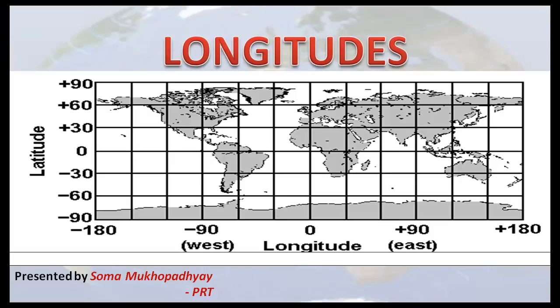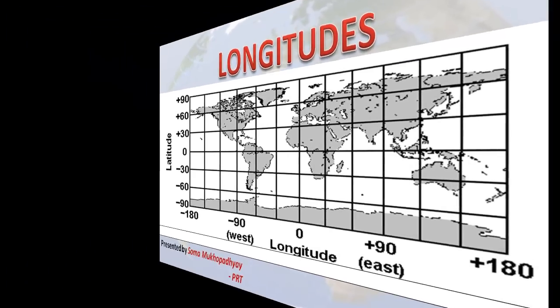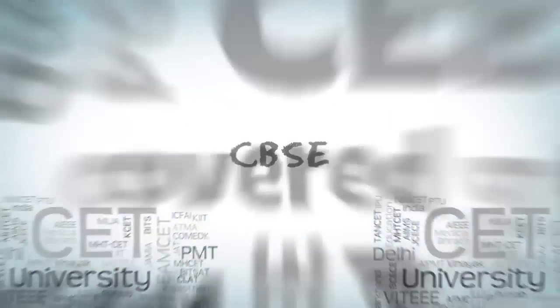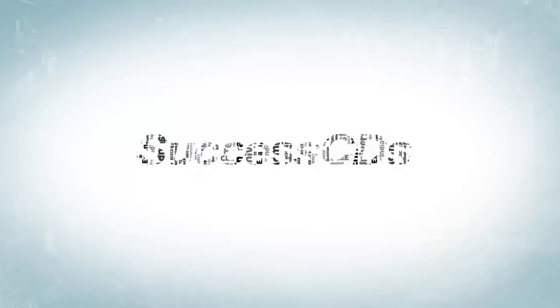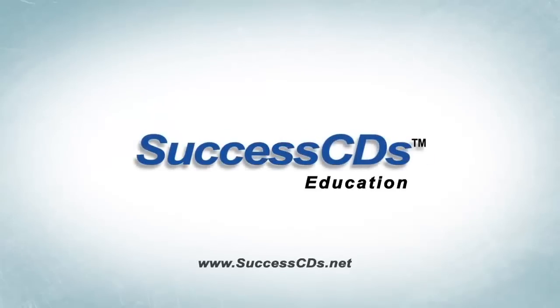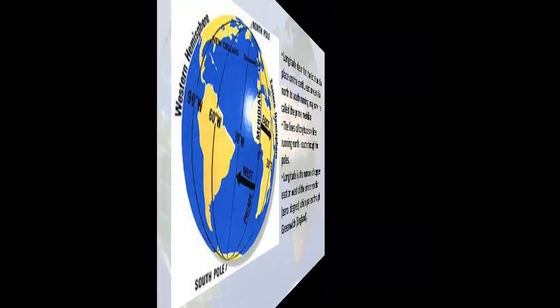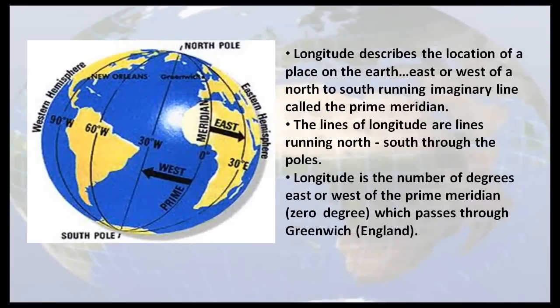If you want to locate a place easily, you need to know the latitude and the longitude of that place. Longitude describes the location of a place on the earth, east or west, of a north to south running imaginary line called the prime meridian. The lines of longitude are lines running north-south through the poles. Longitude is the number of degrees east or west of the prime meridian which passes through Greenwich.